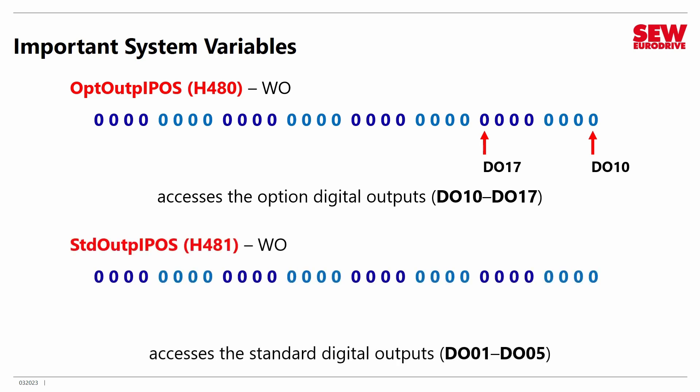Now what about the standard I/O that's built into every MoviDrive B? You use a different location to control those: Standard Output IPOS in H481. This allows you to control DO01 through DO05, and these are the bits that you can flip to manipulate those. Now you're probably thinking: isn't there a DO00? Absolutely there is, although it's usually called DB00 — that's the brake control bit. That is permanently dedicated to brake control, so since it's always controlled by the VFD, you can't control it from IPOS. If you flip that bit in IPOS, it won't work the brake — it is only something the VFD can do.